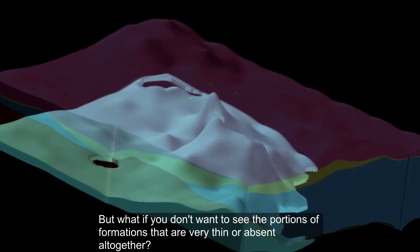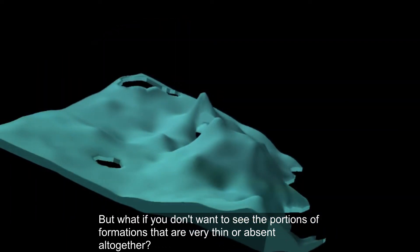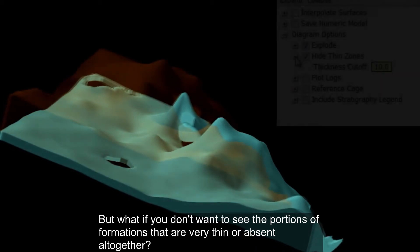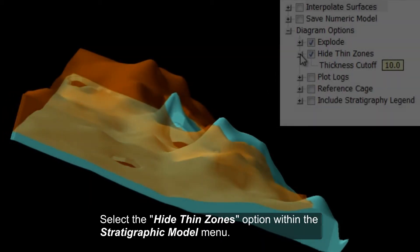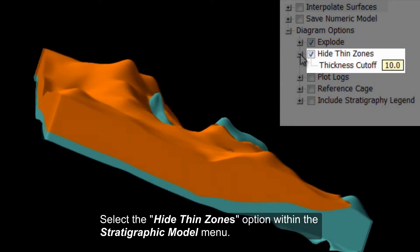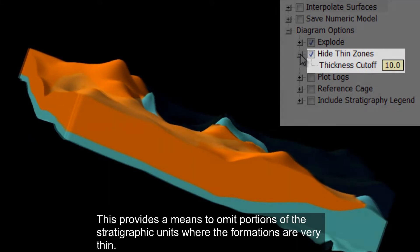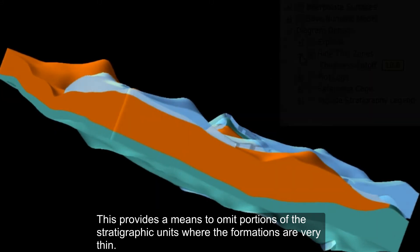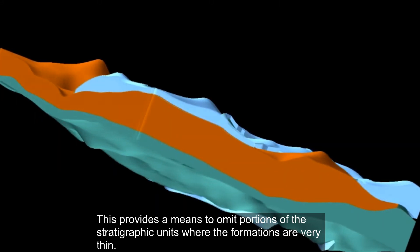But what if you don't want to see the portions of the formations that are very thin or absent altogether? Select the Hide Thin Zones option within the Stratigraphic Model menu. This provides a means to omit portions of the stratigraphic units where the formations are very thin.